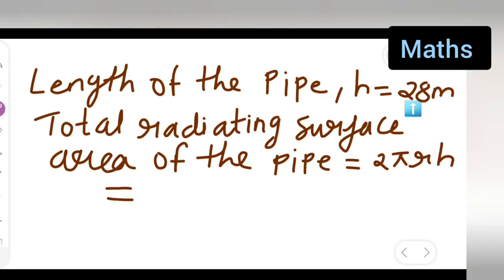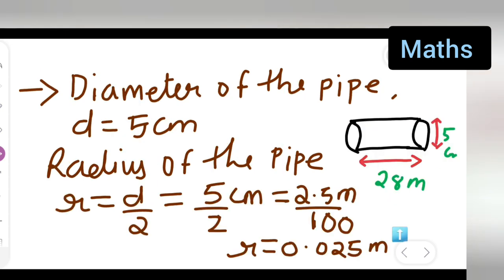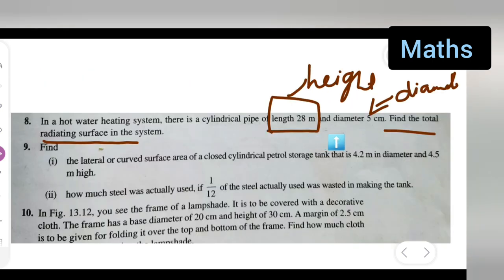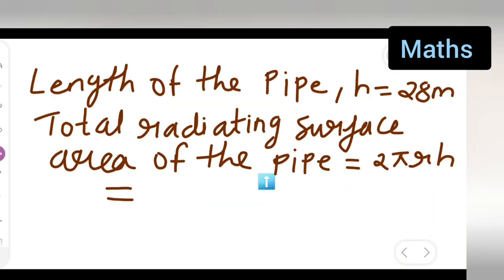We want the total radiating surface area of the pipe. In the question they told you to find the total radiating surface area in the system. So total radiating surface area of the pipe = 2πrh, this is your formula for cylindrical surface area.